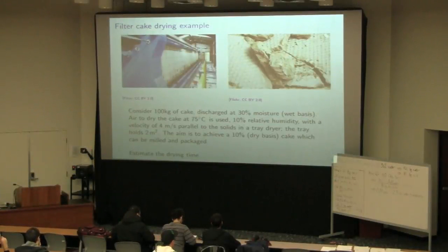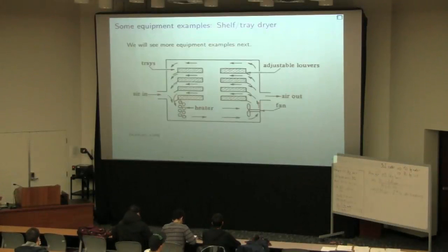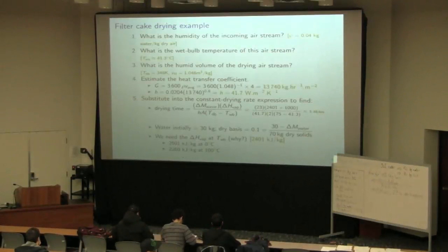So it's 23 kilograms of water that we're aiming to dry. And we're going to do that by supplying air stream at 75 degrees with a rate of 10% relative humidity. That's what we're going to use, provided at a velocity of 4 meters per second relative to the solid.